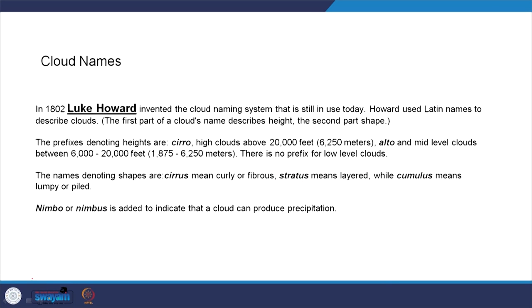To summarize: cloud names are derived by combining the shape and the height, where height comes first as the prefix and shape comes as the suffix. Height is classified into low-lying clouds, mid-altitude clouds, and high-altitude clouds. Low-lying clouds have no prefix; mid-level clouds have the prefix 'alto'; high-level clouds have the prefix 'cirro'. Coming to shape: curly fibrous clouds use the suffix 'cirrus', layered clouds use 'stratus', and puffy or lumpy clouds use 'cumulus'.